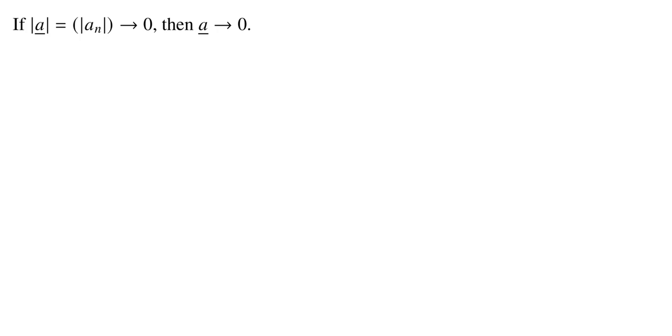In this video, we're going to show that if the absolute value of the sequence, which you get by just taking the absolute value of each of the terms, if that absolute value sequence converges to zero, then the original sequence has to converge to zero as well.